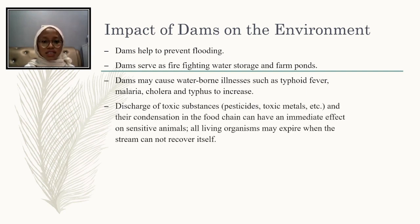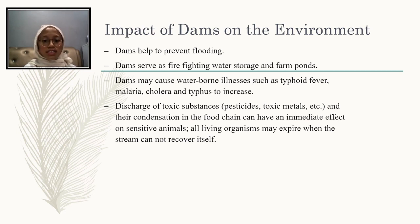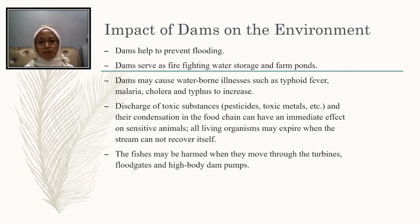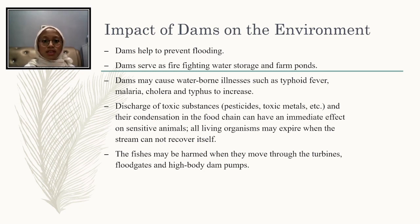The concentration of toxic substances in the food chain can have an immediate effect on sensitive animals. Living organisms may perish when the stream cannot recover itself. Furthermore, fish may be harmed when they move through the turbines, floodgates, and high-body dam pumps. There are many other impacts of dams on the environment, either positive or negative.